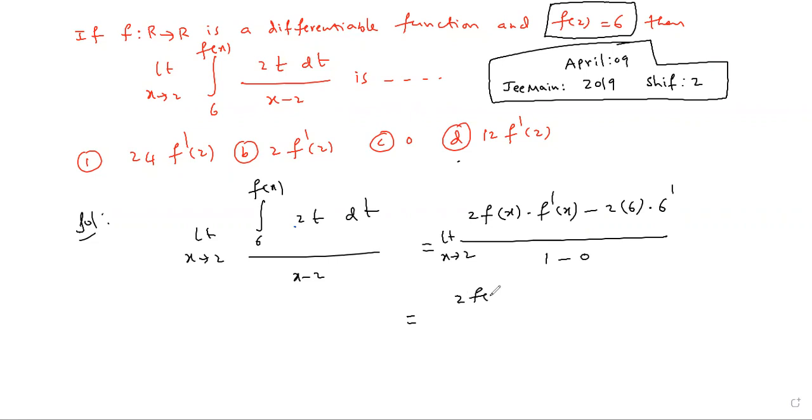You can write it as 2 into f(2) into f'(2), 6 dash constant differentiation 0, by 1. So f(2) is given as 6, simply substitute: 2 into 6, f'(2) equals 12 into f'(2).